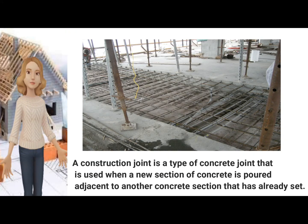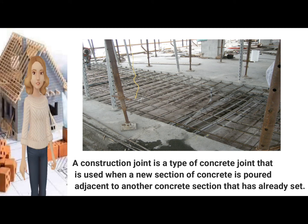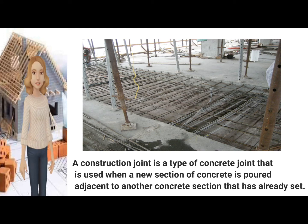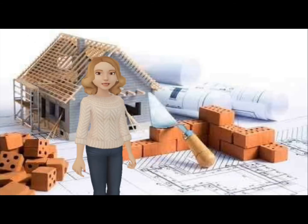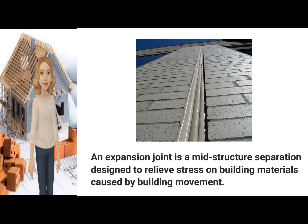First is the construction joint. A construction joint is a type of concrete joint that is used when a new section of concrete is poured adjacent to another concrete section that is already set.